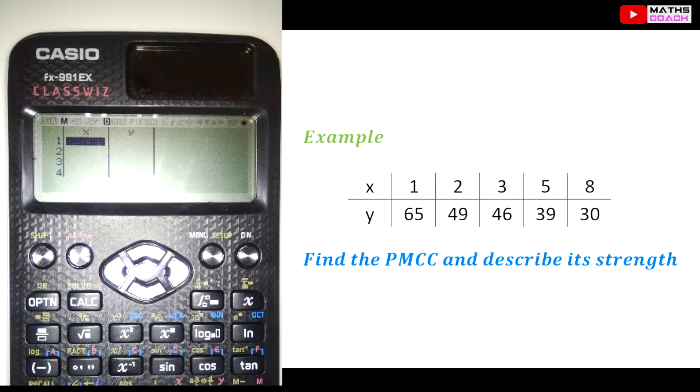Now you may have had to draw a scatter graph when you were younger. Without us drawing a scatter graph, if you look at the numbers on X, they are rising. On Y, they are descending. It's quite obvious as X goes up, Y goes down. We have got ourselves a negative correlation. It's not enough to say it's negative correlation. We need to say what strength it is. We need to state the value of PMCC.